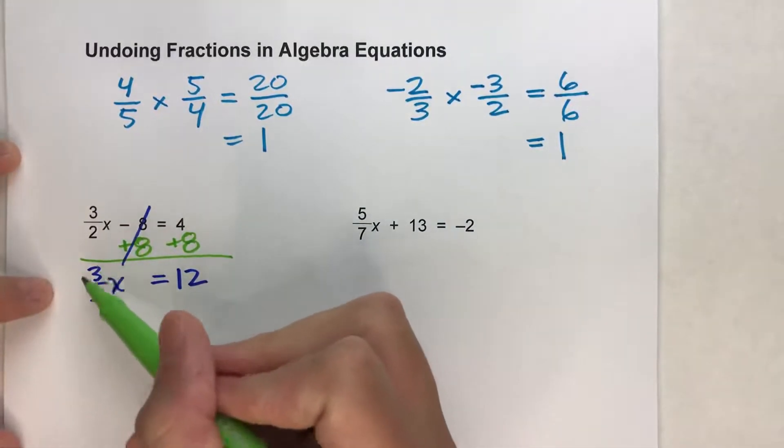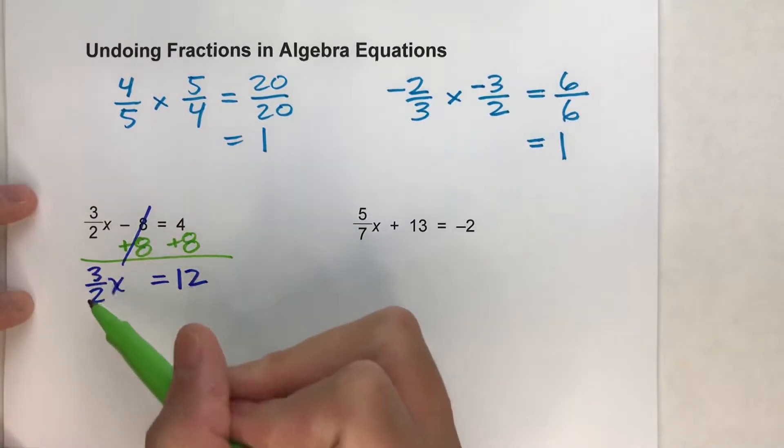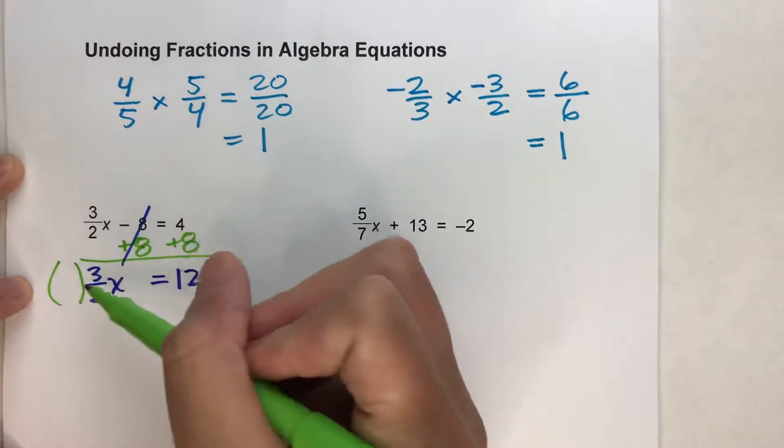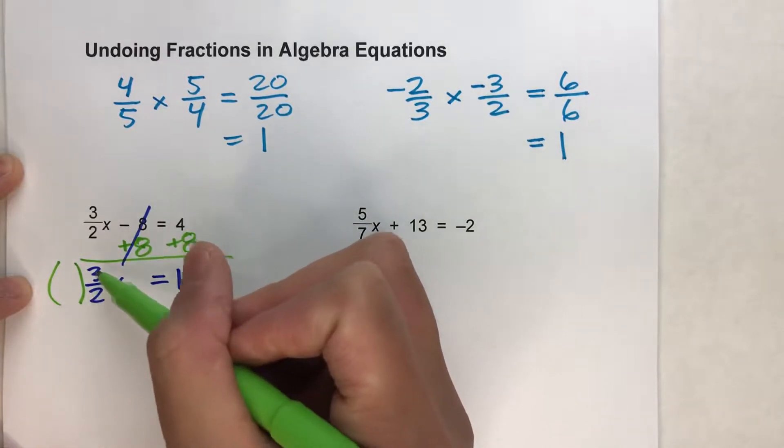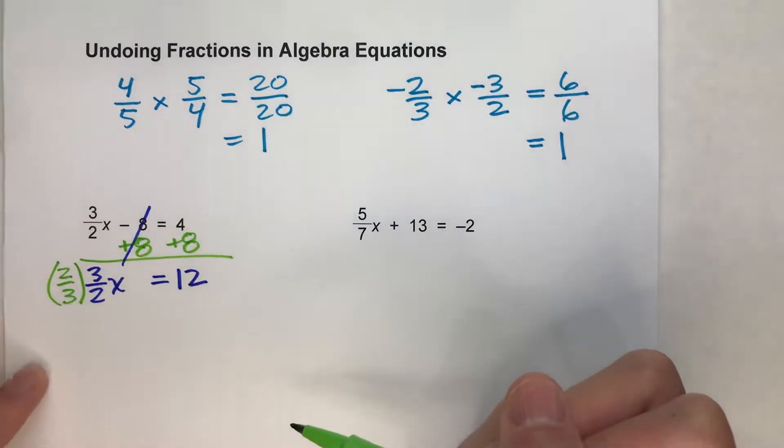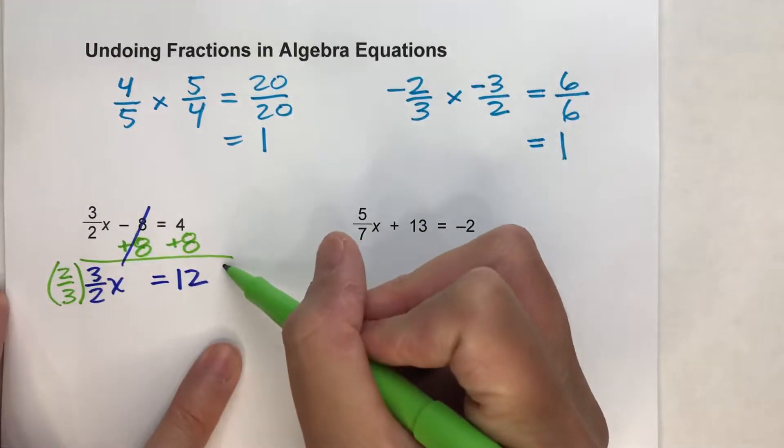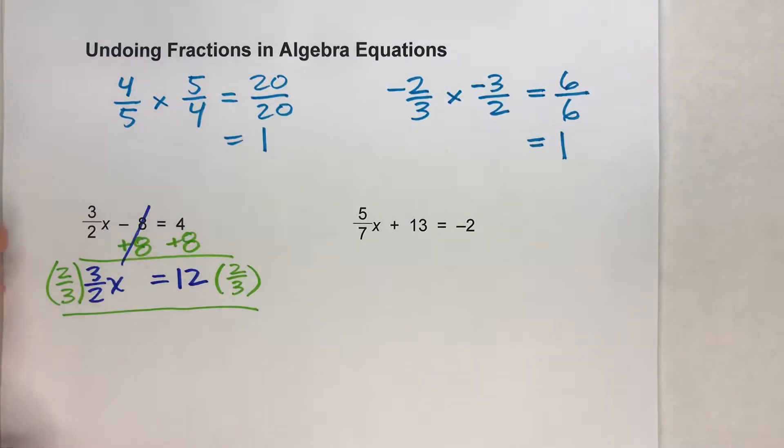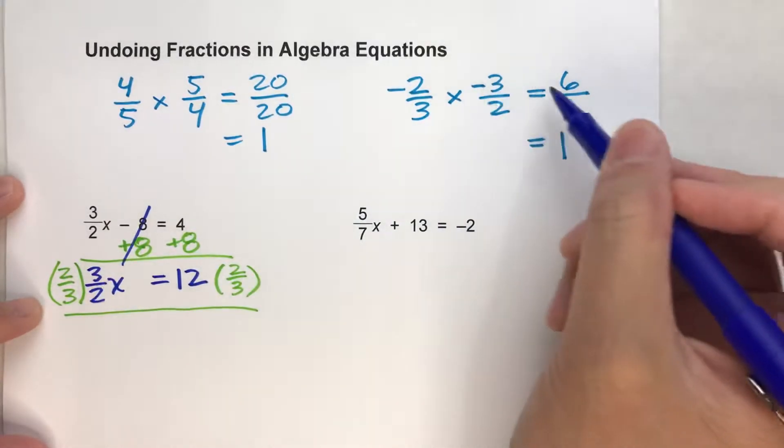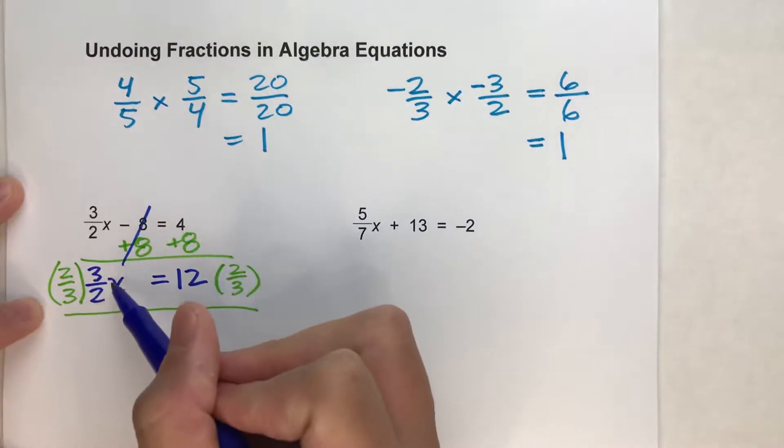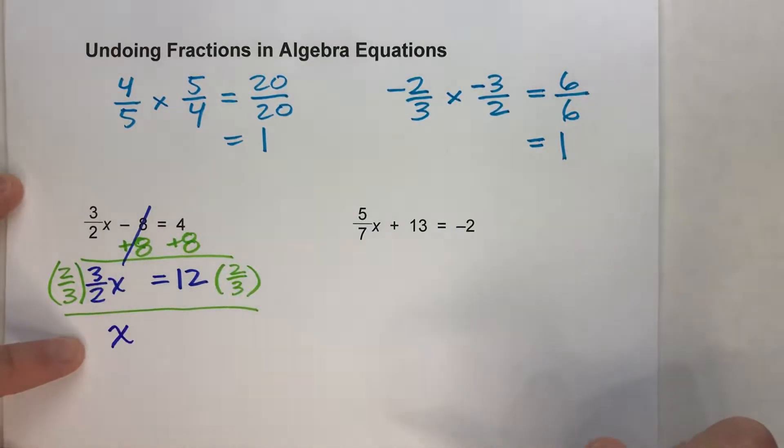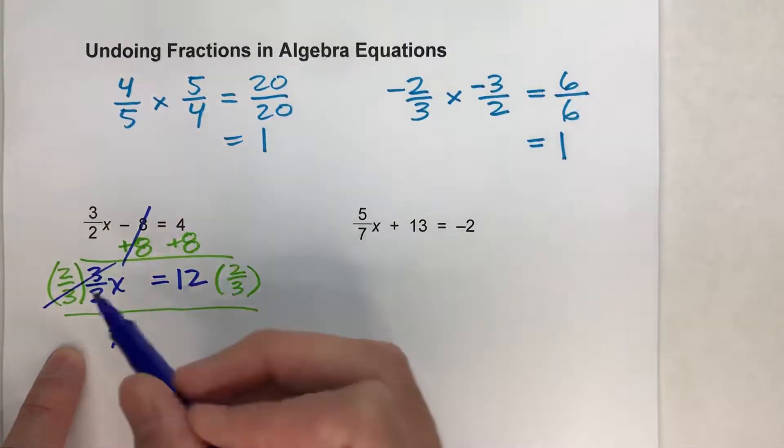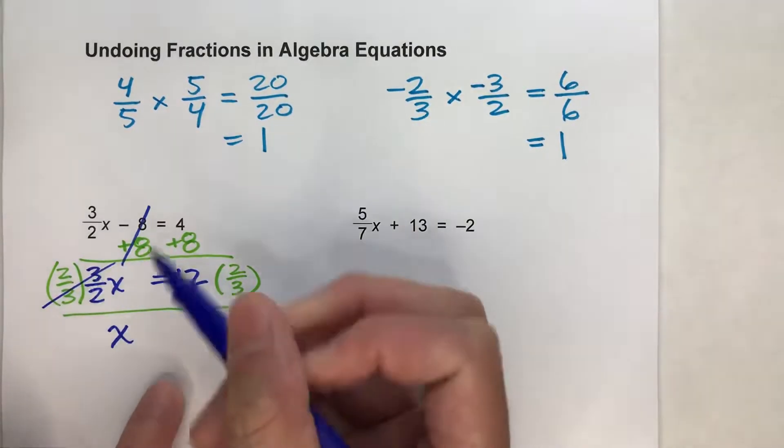And now is the point where I have to undo this 3 halves x. It's 3 halves times x. What I can do here is I can multiply this side of the equation by the reciprocal of 3 over 2. And the reciprocal of 3 over 2 is 2 over 3. But what I do to one side of the equal sign, I have to do to the other. So now, when I do that, 2 over 3 times 3 over 2, as we were kind of talking about before, 6 over 6, which is 1 whole. So this all ends up being 1 whole x. You can almost think of it as these undo each other. These two fractions multiplied together undo each other to make just 1 whole x, which is what we want.